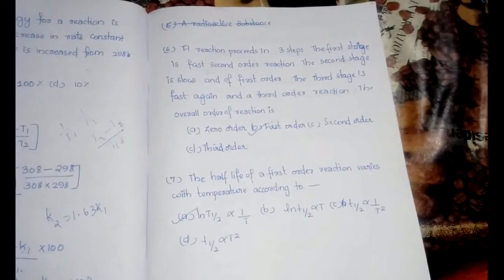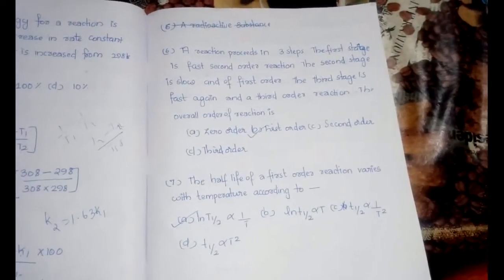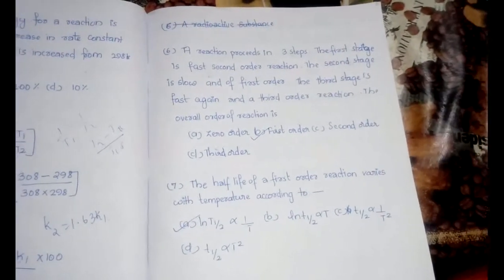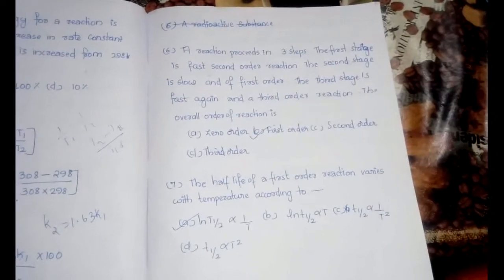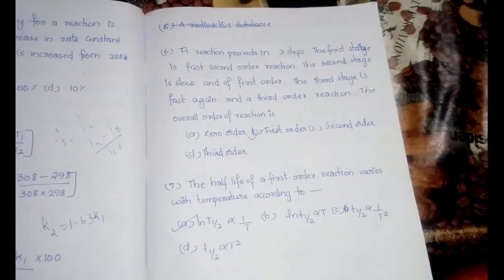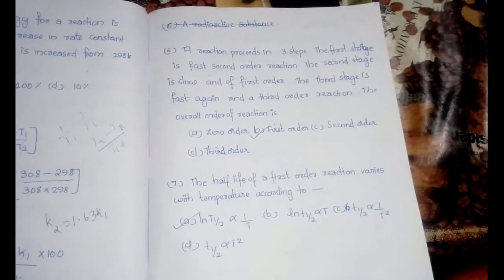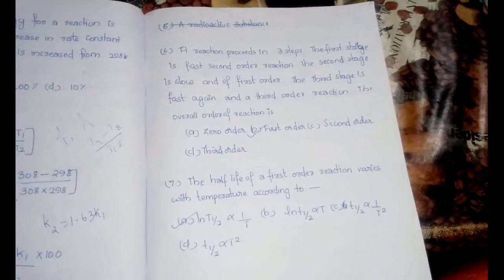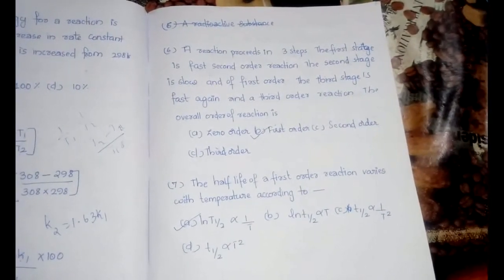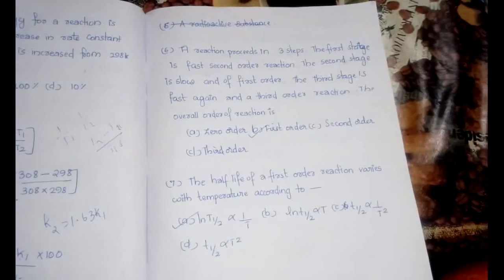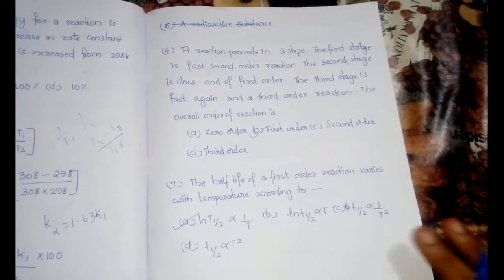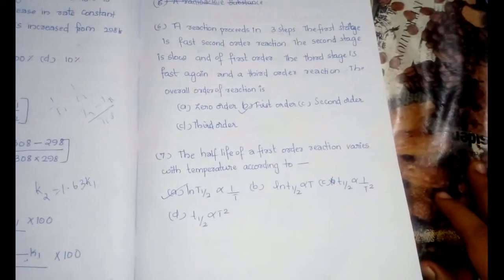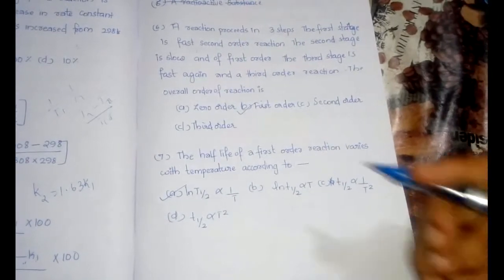Question 6: a reaction proceeds in three steps — step 1 is fast and second order, step 2 is slow and first order, step 3 is fast and third order. The overall order of the reaction is first order, because in a sequence of steps the slowest step is the rate-determining step. The overall rate is determined by the slowest step, which here is first order.